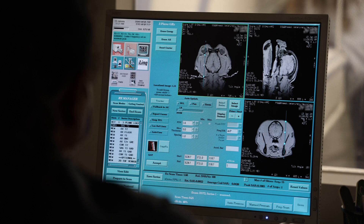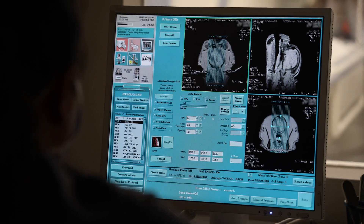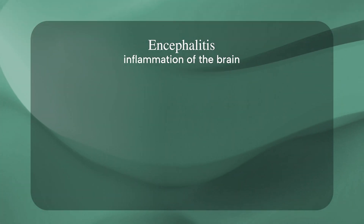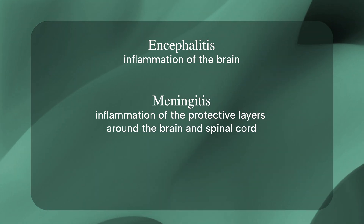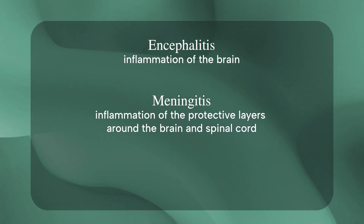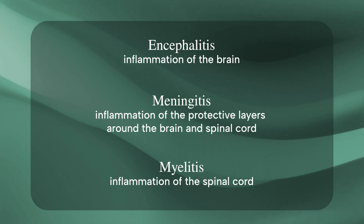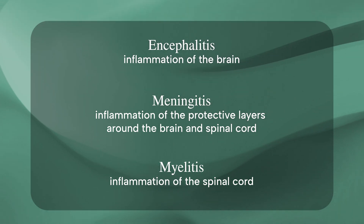One common problem that often affects a dog's nervous system is called meningoencephalomyelitis. This term means inflammation of the brain, spinal cord, and the protective layers around them. Depending on which part is inflamed, we use different terms. Encephalitis means inflammation of the brain. Meningitis means inflammation of the coverings of the brain and spinal cord, and myelitis means inflammation of the spinal cord itself.